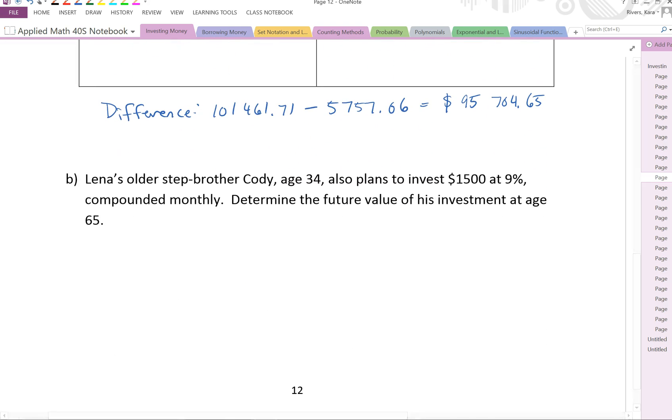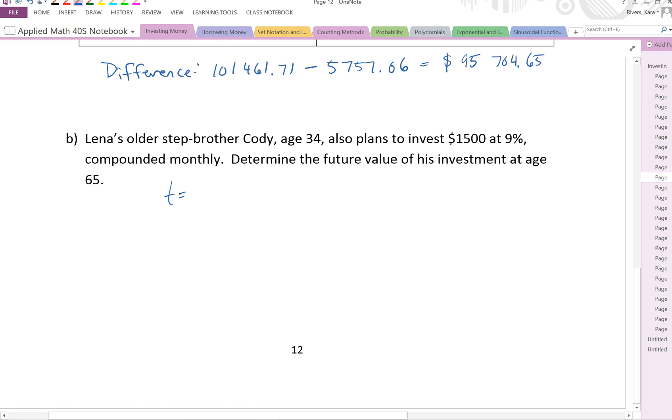In part B, it says Lena's oldest stepbrother, Cody, age 34, also plans to invest $1,500 at 9% compounded monthly until he is 65. So he should have a value somewhere in between there. So if we figure that one out, his time would be 65 minus 34, which gives us a difference of 31 years. So plugging that in, $1,500, 1 plus 0.09 divided by 12, all to the exponent of 12 times 31, we can see that he's going to make, if we punch all of those values in, $24,168.61. So it is between what Lena got and what Jolie got in terms of their future values on their investments.